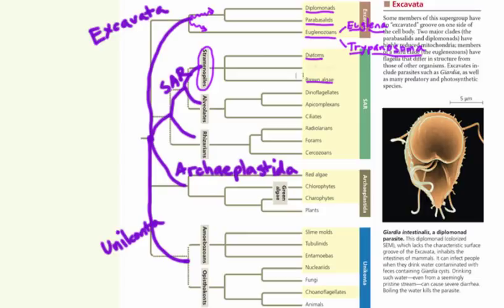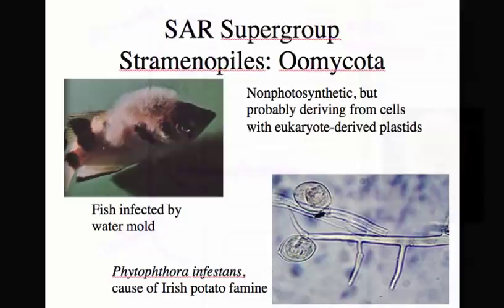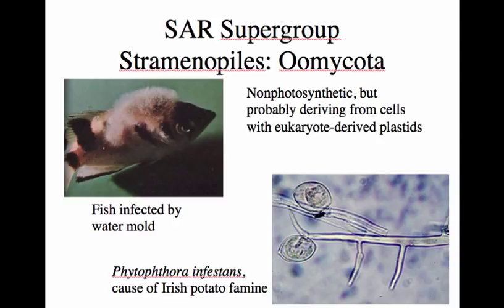Our third group of stramenopile organisms is the oomycota, or water molds, unlike the other two in being heterotrophic and fungus-like rather than phototrophic and plant-like. Some oomycetes include fish parasites that attack fish after their protective slime layer has been compromised. If you catch a fish and plan to release it, you shouldn't use a towel to hold it while removing the hook—doing so wipes off the slime and is basically killing the fish.